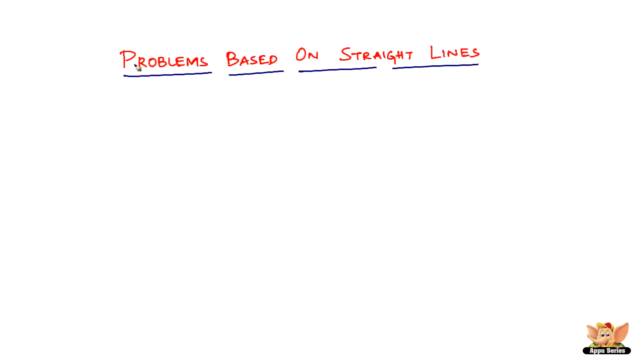In this video, let us continue to solve more problems based on straight lines. Here we've got a problem which reads like this. It says if the angle between two lines is pi by 4, that is nothing but 45 degrees.